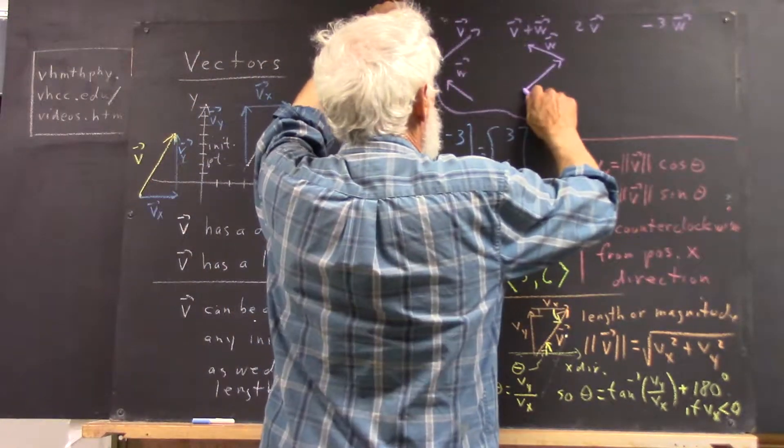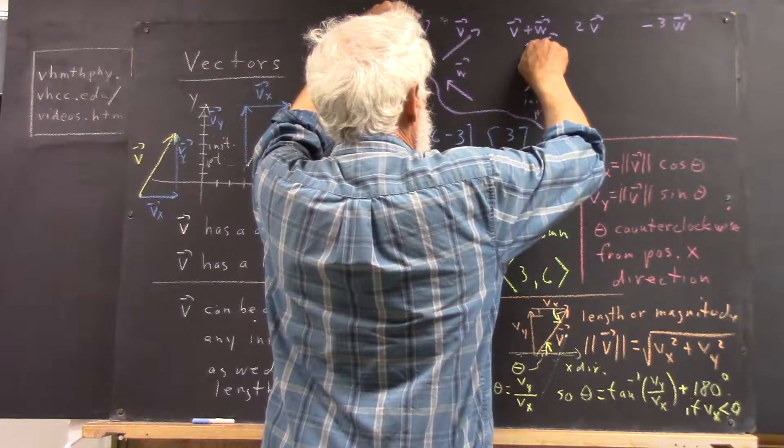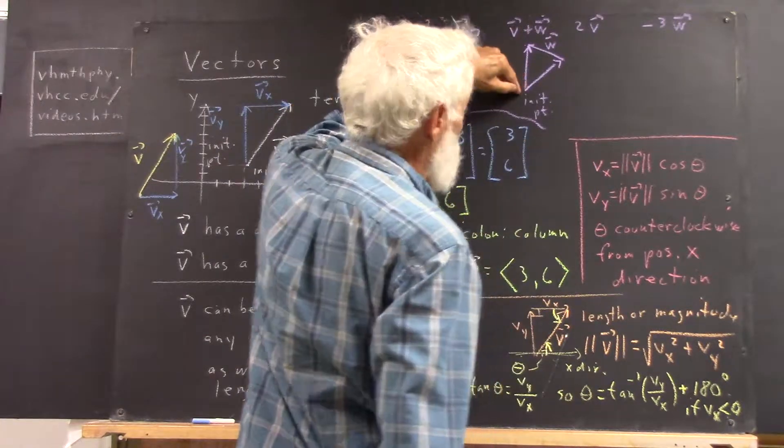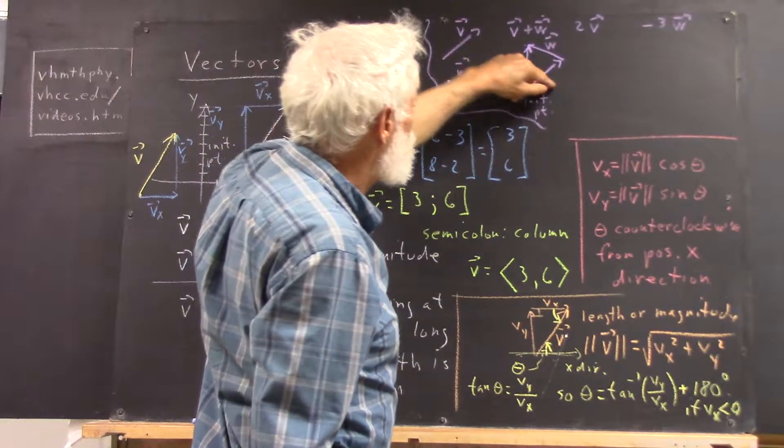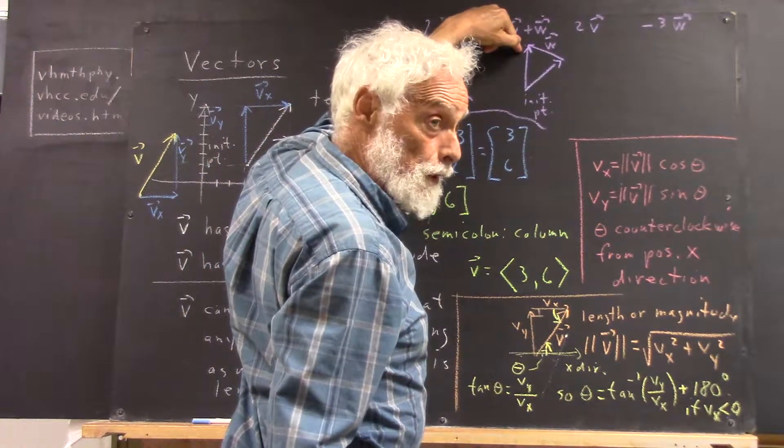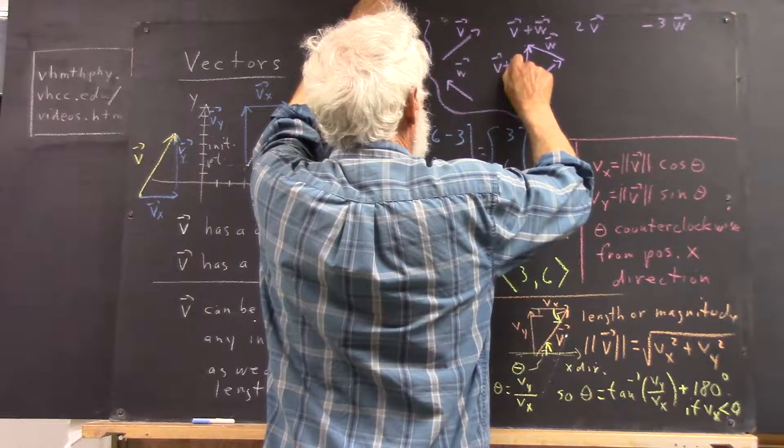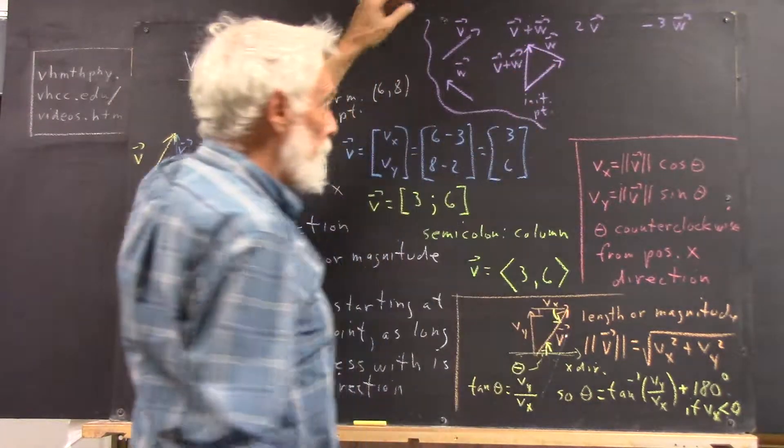And then, the vector v plus w goes from the initial point of v to the terminal point of w. So, here's our vector v plus w.